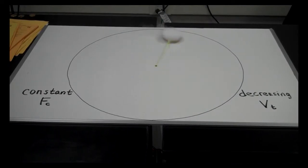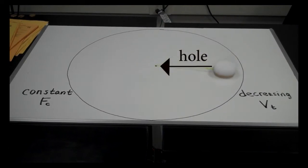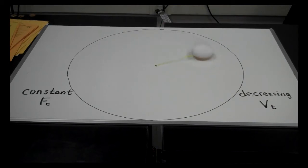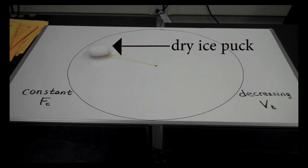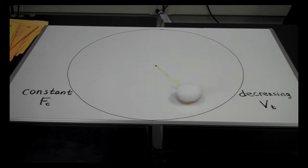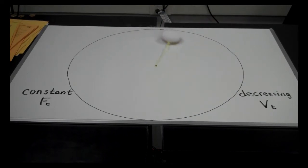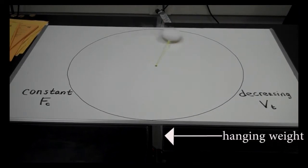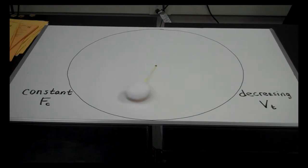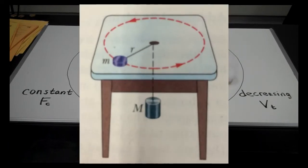Here's our setup. We have this whiteboard with a hole cut in the center, and a string dropped through the center. On the end of the string is a rubber band connected to a puck made out of dry ice — a round cylindrical hockey-puck-sized piece that slides very well on the whiteboard. The string passes through the hole and has a weight attached underneath the table, producing tension in the string.